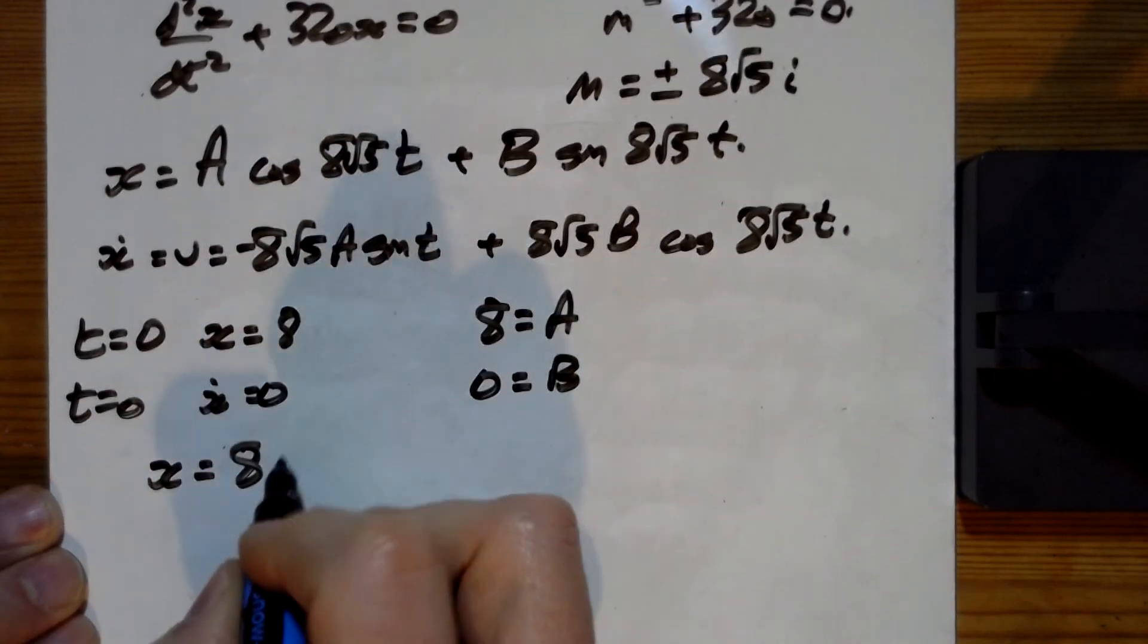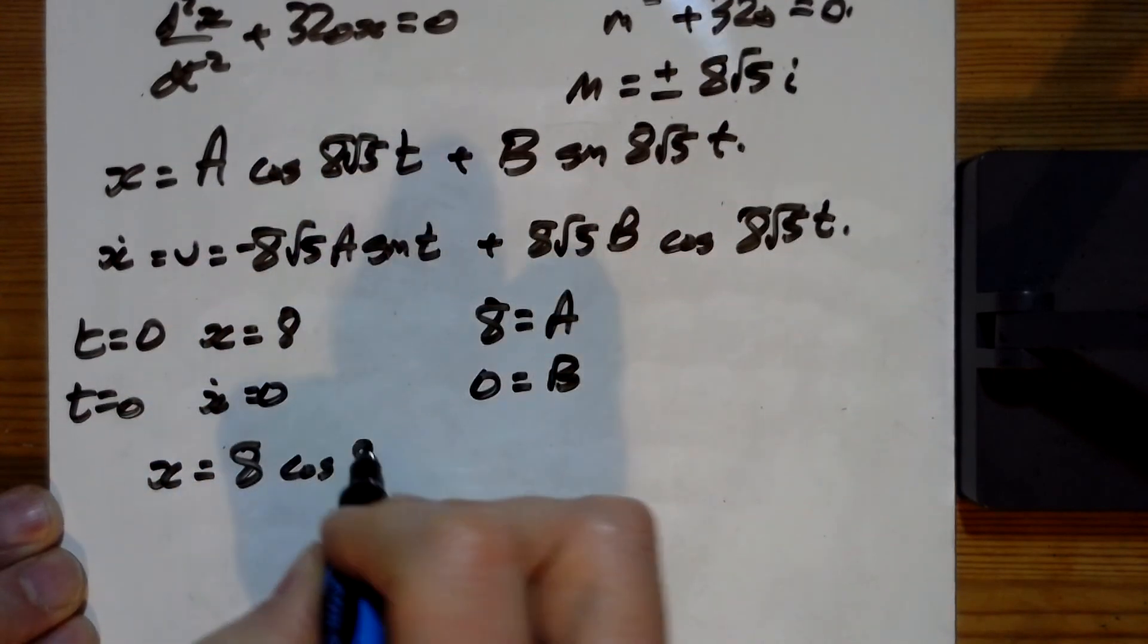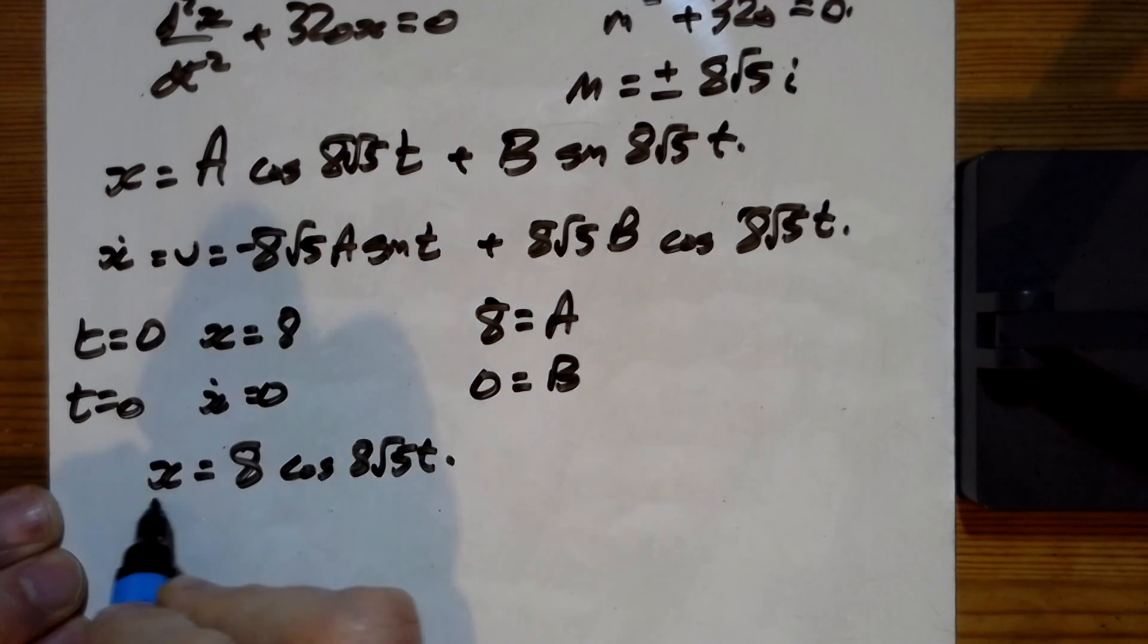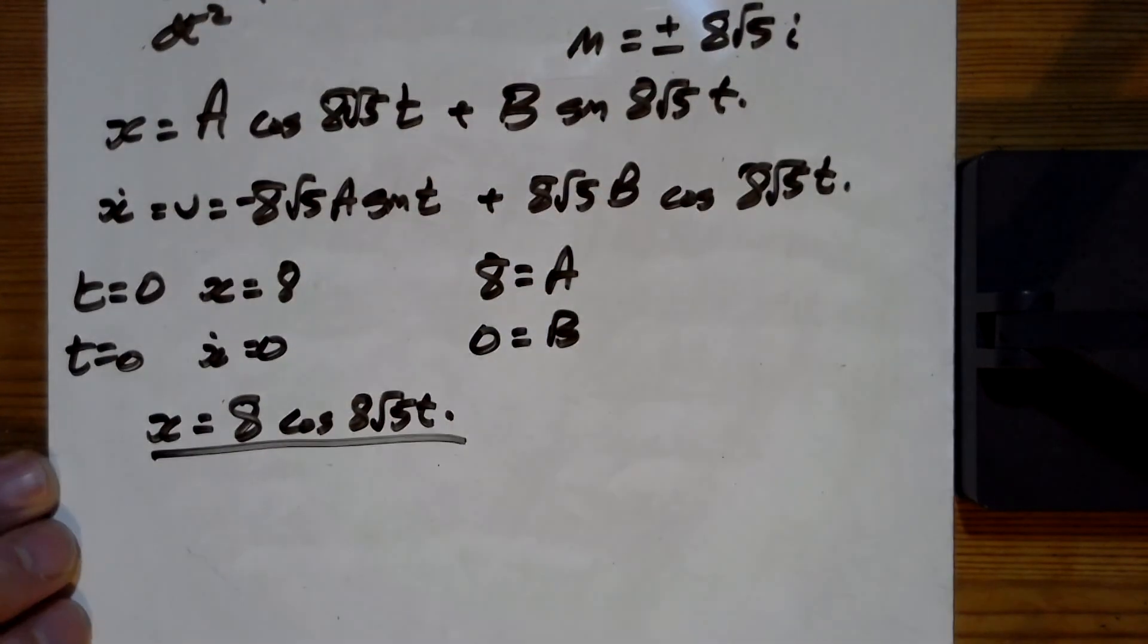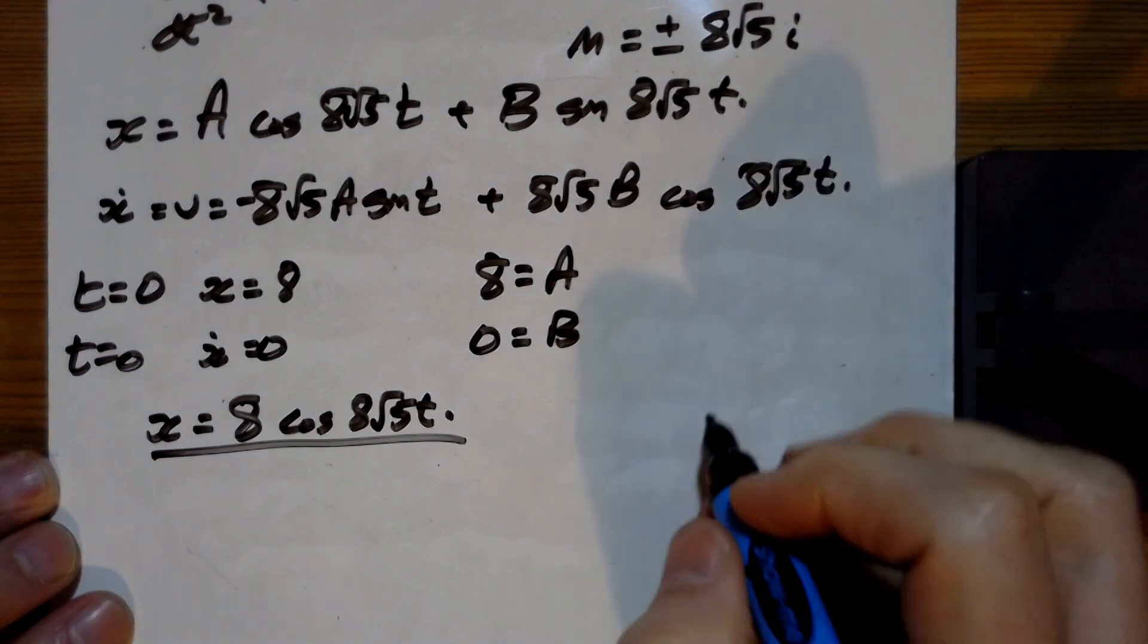just got x = 8 cos 8√5t as the equation. The period of the resulting